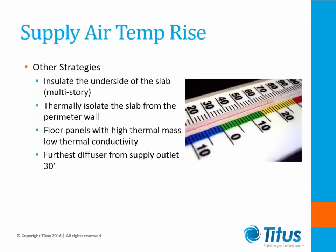There are other strategies that can be employed to reduce supply air temperature rise besides partitions. These include insulating the underside of each floor slab in a multi-story building, isolating the floor slabs from the perimeter walls, selecting floor panels with high thermal mass and low thermal conductivity, and using more ductwork to get within 30 feet of the furthest diffuser.